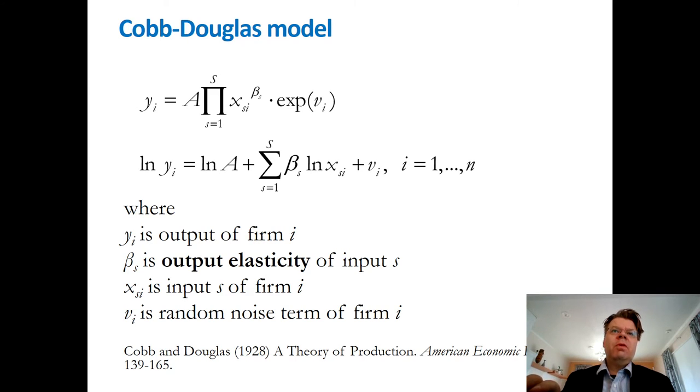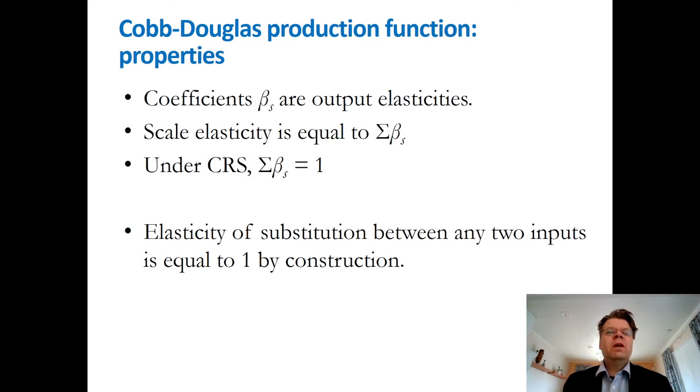I want to still a couple of points about this production function. Why Cobb-Douglas production function is very convenient and is also still widely used, even in the modern stochastic frontier analysis. A couple of nice properties are that these coefficients beta_s have an appealing interpretation as output elasticities. In practice, it means that if you increase input s by 1% and keep all other inputs constant, then output increases by beta_s percent. These coefficients beta have very intuitive interpretation as the output elasticities of inputs.